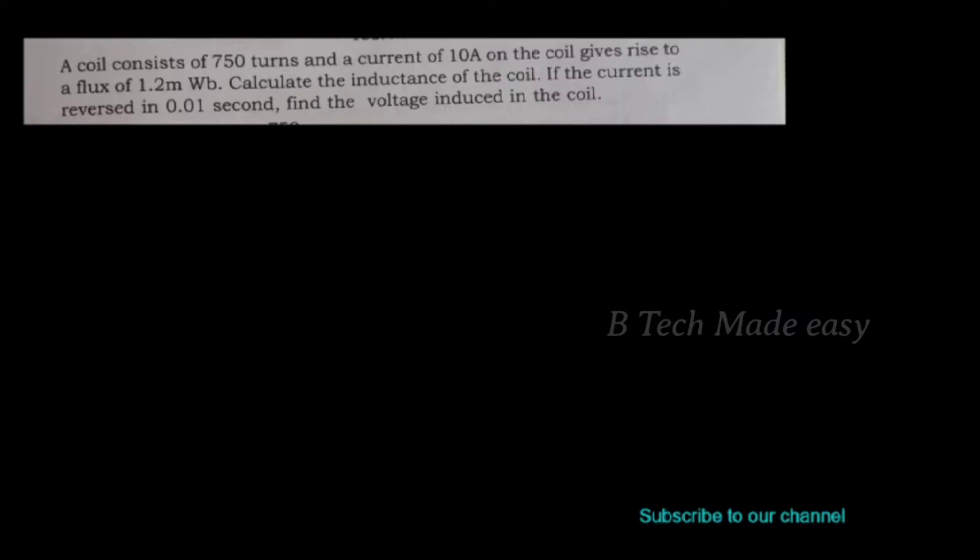A coil consists of 750 turns and a current of 10 amperes in the coil gives rise to a flux of 1.2 milliwebers. Calculate the inductance of the coil. If the current in the coil is reversed in 0.01 seconds, find the voltage induced in the coil.